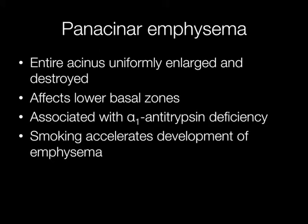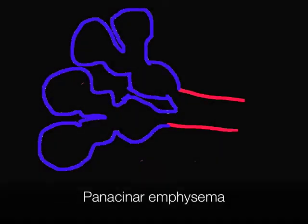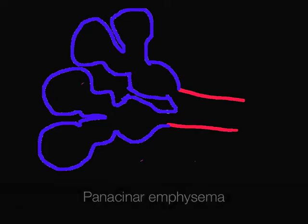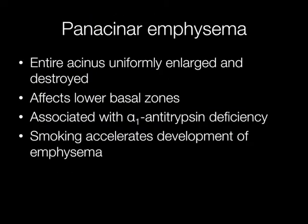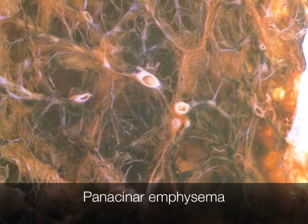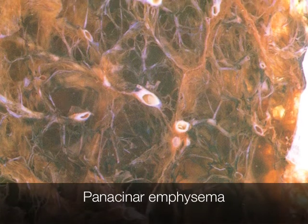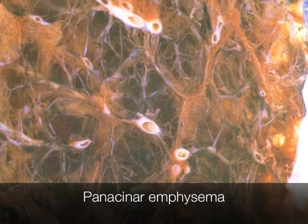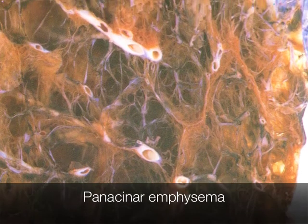Panacinar emphysema is the type of emphysema associated with alpha-1 antitrypsin deficiency, where the entire acinus is uniformly enlarged and destroyed. This type of emphysema tends to affect the lower basal zones of the lungs. It is very important that patients with alpha-1 antitrypsin deficiency are aware that smoking will accelerate the development of emphysema. This is what panacinar emphysema looks like, with destruction of the fine alveolar architecture.